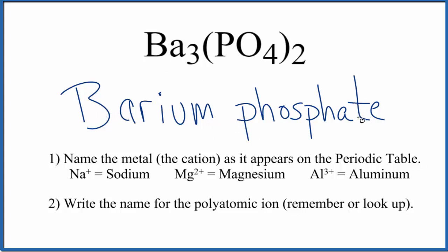If you're given barium phosphate and you're asked to write the formula, you need to recognize that barium is 2+ and the whole phosphate here is 3-.